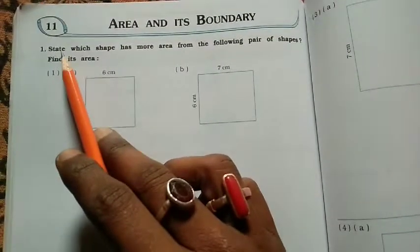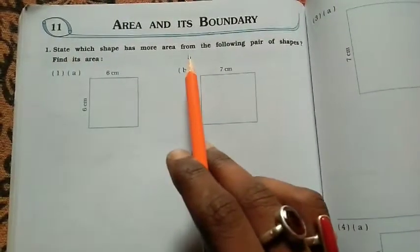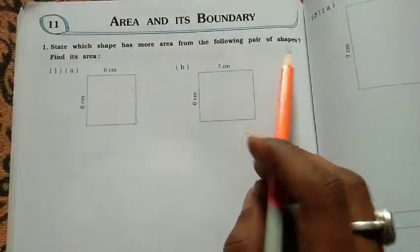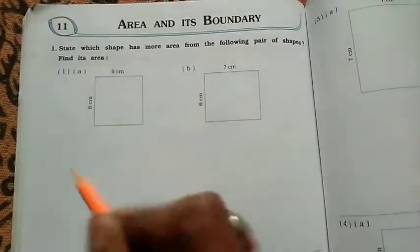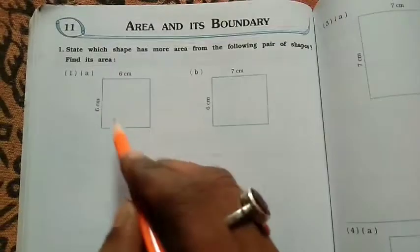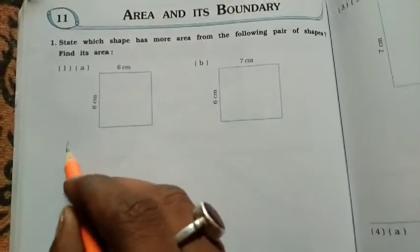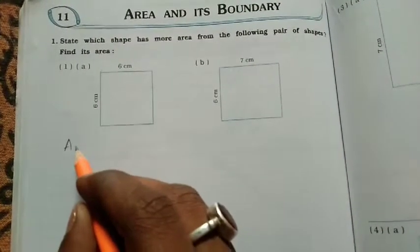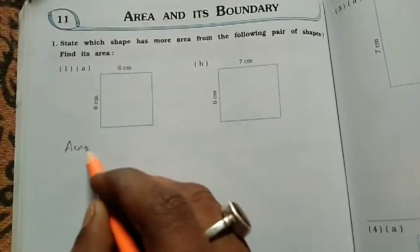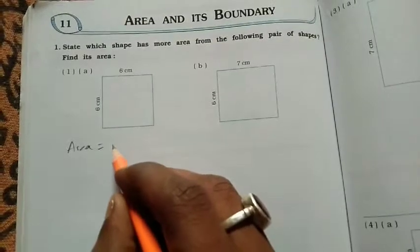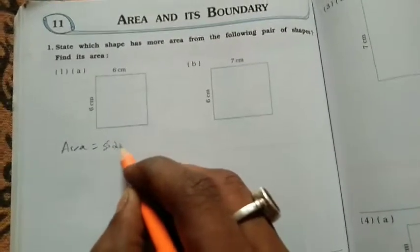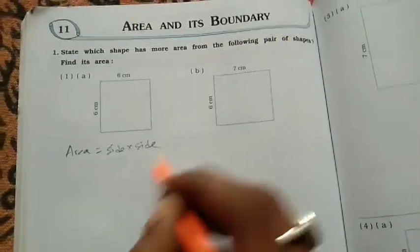Let's start question 1 of page number 144. Question number 1: State which shape has more area from the following pairs of shapes. Find its area. Now you will know - this is 6, 6, and 6. You know what? Area, you know that - side into side.